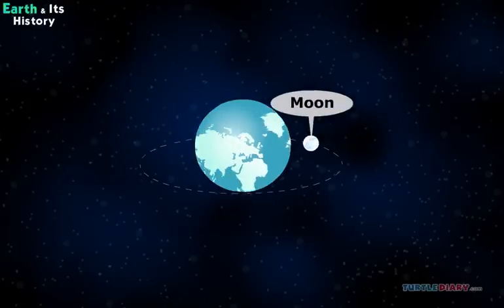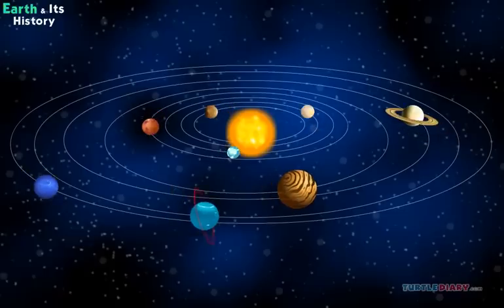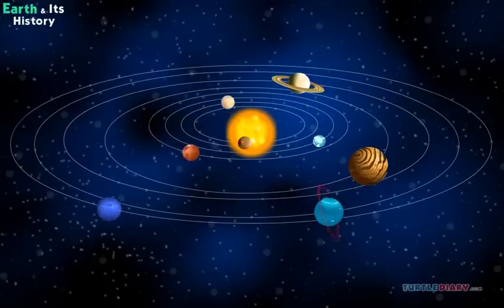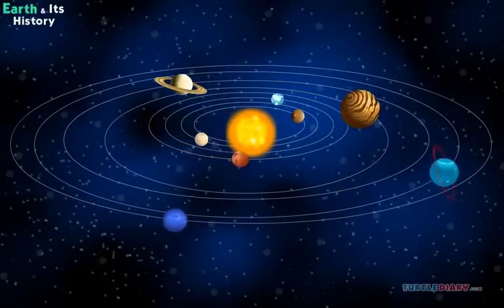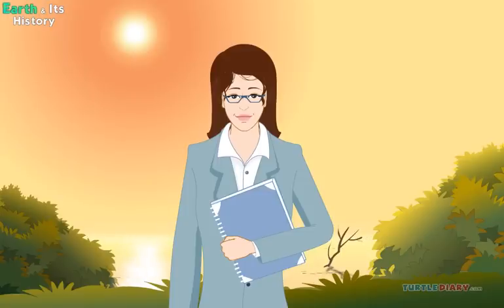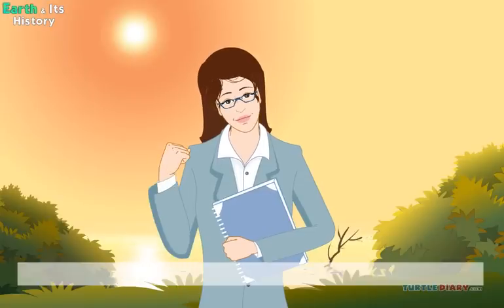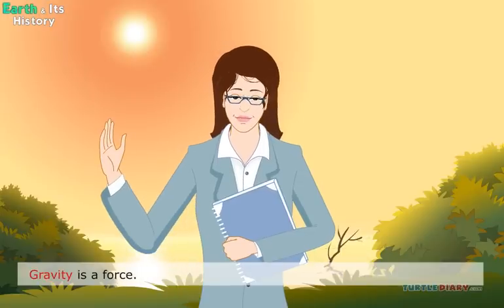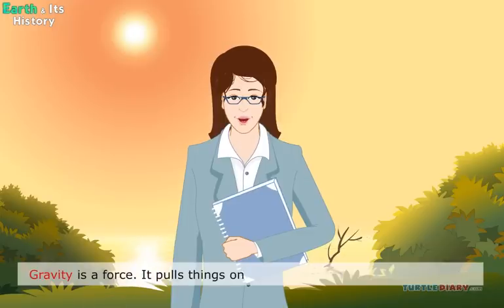Why do moons orbit planets? Why do planets orbit the sun? It is all because of gravity. Gravity is a force. It pulls things on the Earth toward the center of Earth.